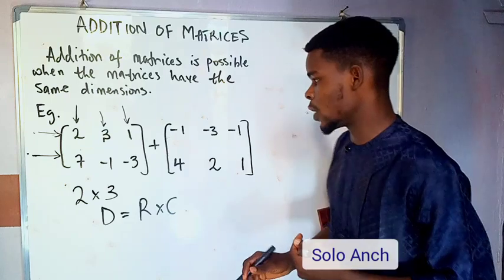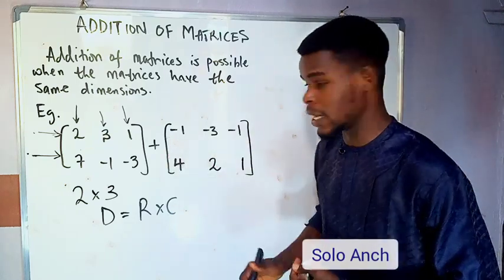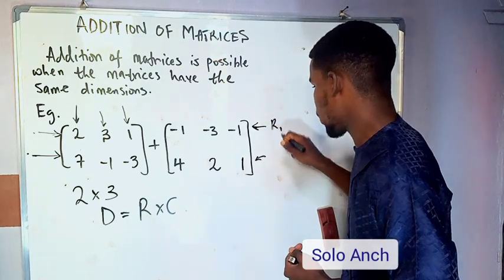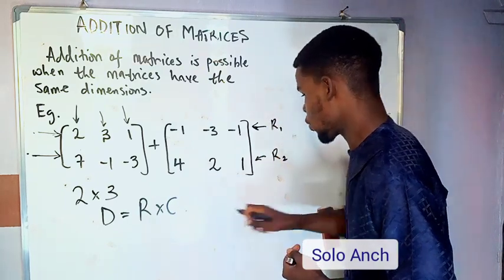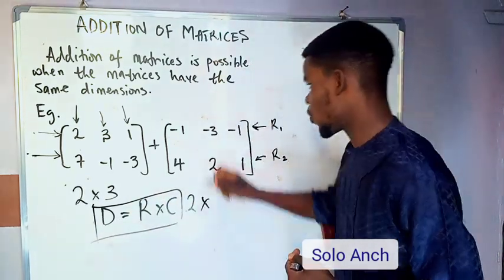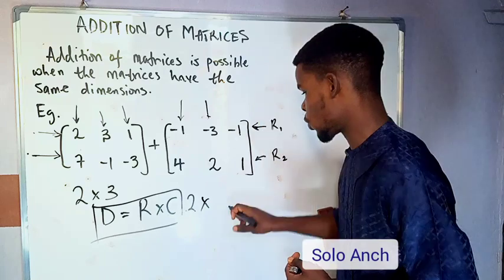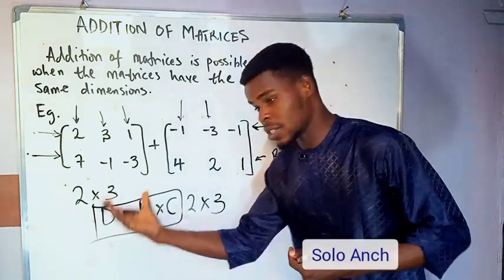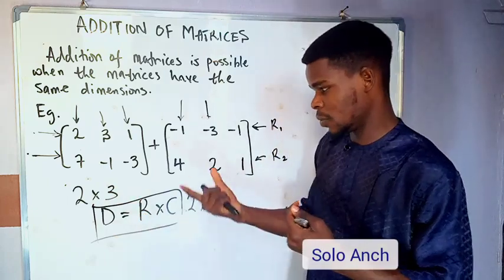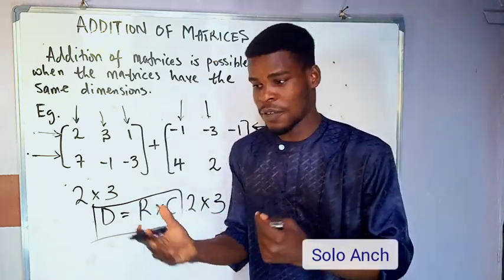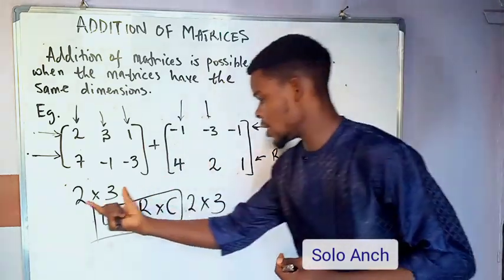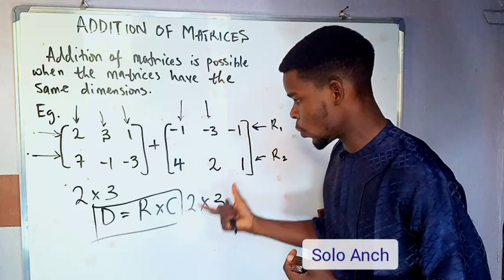Now let's look at the second matrix. The number of rows: there are two — row one and row two — so two rows. And the number of columns: there are three. So the dimensions are the same — 2×3. Note it's called 'two by three,' not 'two times three.' Since the dimensions of the matrices are equal, we can add them.